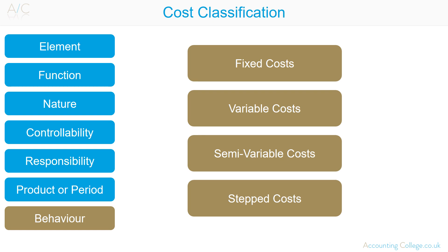Behavioural costs are all relevant within a range of activity, meaning the activity level over which the observed cost behaviour is valid. Understanding cost behaviour is very important for management's planning and control processes. For example, the fixed cost of rent is only fixed up to the capacity of the unit rented — once this is exceeded, new premises will need to be rented and this fixed cost becomes a stepped cost. Therefore, managers must use cost behaviour to predict costs within a cost behaviour range.